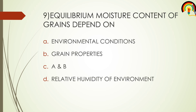Equilibrium moisture content of grain depends on — option A: environmental conditions, option B: grain properties, option C: both A and B, option D: relative humidity of the environment. The answer for this question is both environmental conditions and grain properties — both A and B.